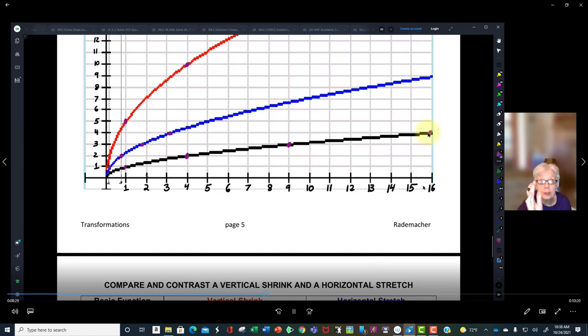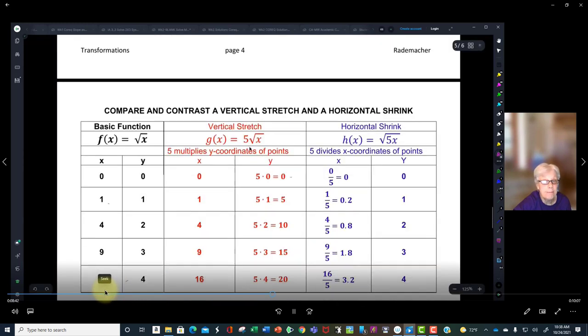You see that the x-coordinates are all getting scrunched, a very technical term. And that's the difference of the effect of this 5, a number bigger than 1, on a vertical stretch and a horizontal shrink. It all depends on position.